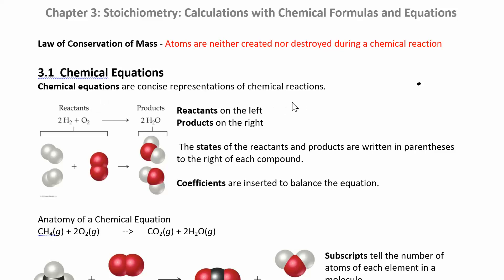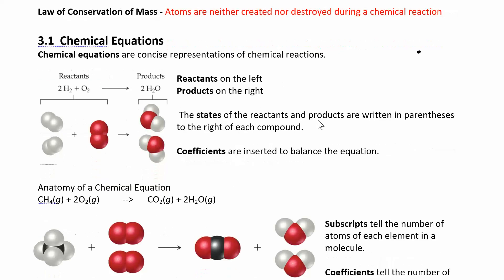Chemical equations are the concise representation of a chemical reaction. As you may remember from chapter 1, in chemical reactions you're making new substances. You always have your reactants on the left and your products on the right. In this case we have 2 H₂ plus O₂ giving you 2 H₂O — reactants on the left, products on the right.